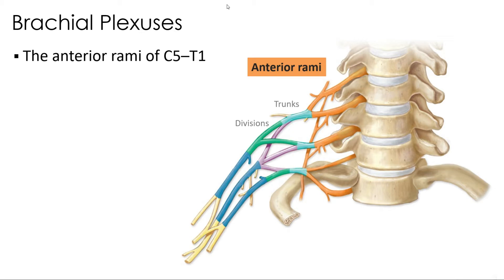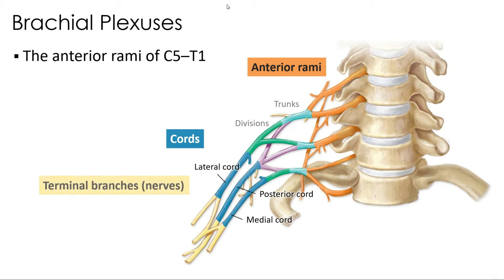Briefly, the five anterior rami — colored here in orange and also known as roots — merge to form three trunks, each of which then splits into its own anterior and posterior division. Once these reach the axilla, the divisions converge to form three cords. The cord names reference their position relative to the axillary artery: there's a lateral cord, a medial cord, and a posterior cord. Nearly 20 nerves originate from this network, but in this course we focus on the five major terminal branches.